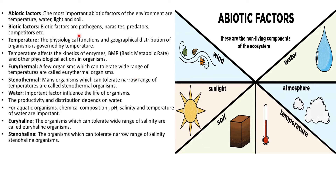Now let's look at abiotic factors. The most important abiotic factors of the environment are temperature, water, light and soil. Biotic factors include pathogens, parasites, predators, competitors, etc.